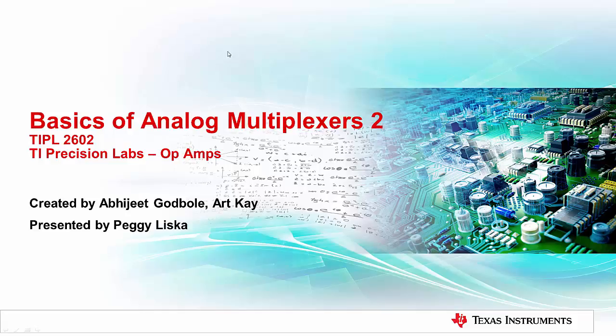Hello, and welcome to the TI Precision Lab series on basics of analog multiplexers. In the first part of this series, we discussed two important parameters of the MUX: on resistance and on capacitance. This video will provide an overview of the other two performance parameters of multiplexers, which are leakage current and charge injection. The goal of this series is to understand the DC performance parameters of multiplexers and how they affect data acquisition system performance.